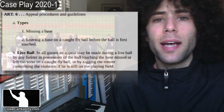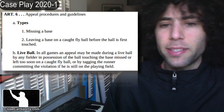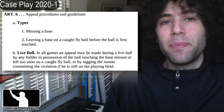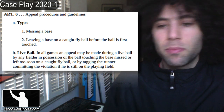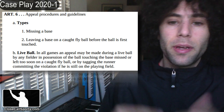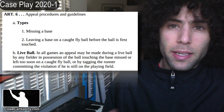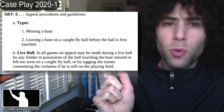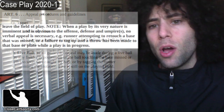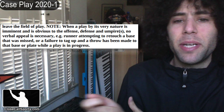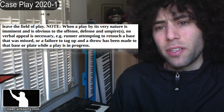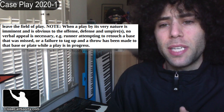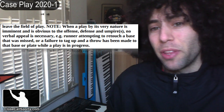In high school it's a little bit different. The rule is 826B, and it says that for a live ball appeal in all games, an appeal may be made during a live ball by any fielder touching the base missed. There is a special note in the rule — 825 actually has a note that says: when a play by its very nature is imminent and obvious to the offense, defense, and umpires, no verbal appeal is necessary. For example, a runner attempting to retouch the base that was missed.